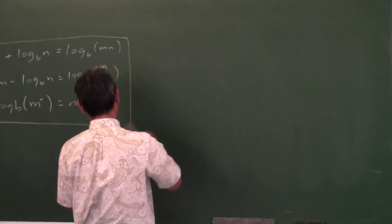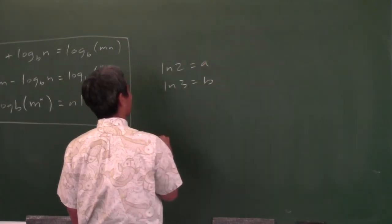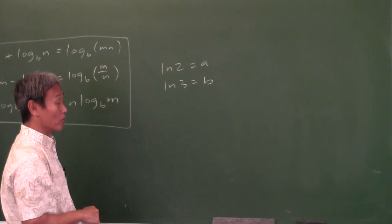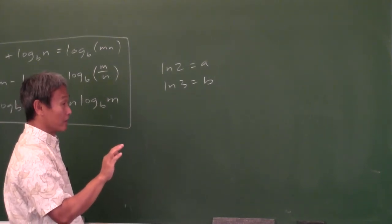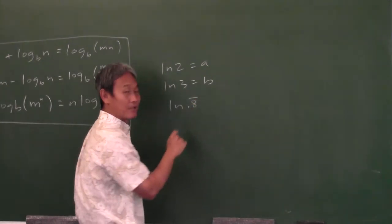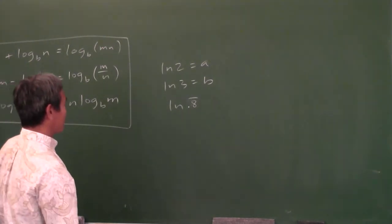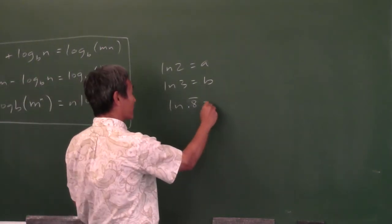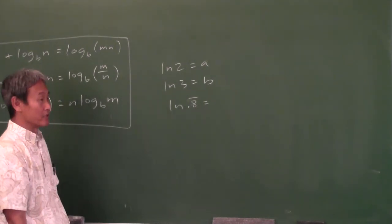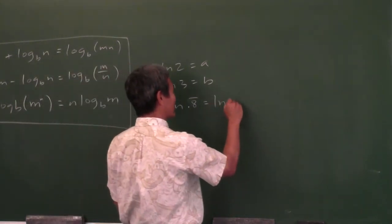Let's say natural log 2 equals A and natural log 3 equals B. Write the natural log of 0.8 repeating in terms of A and B. First, change 0.8 repeating to a fraction — what is 0.8 repeating? It's 8/9. So that equals natural log of 8/9.